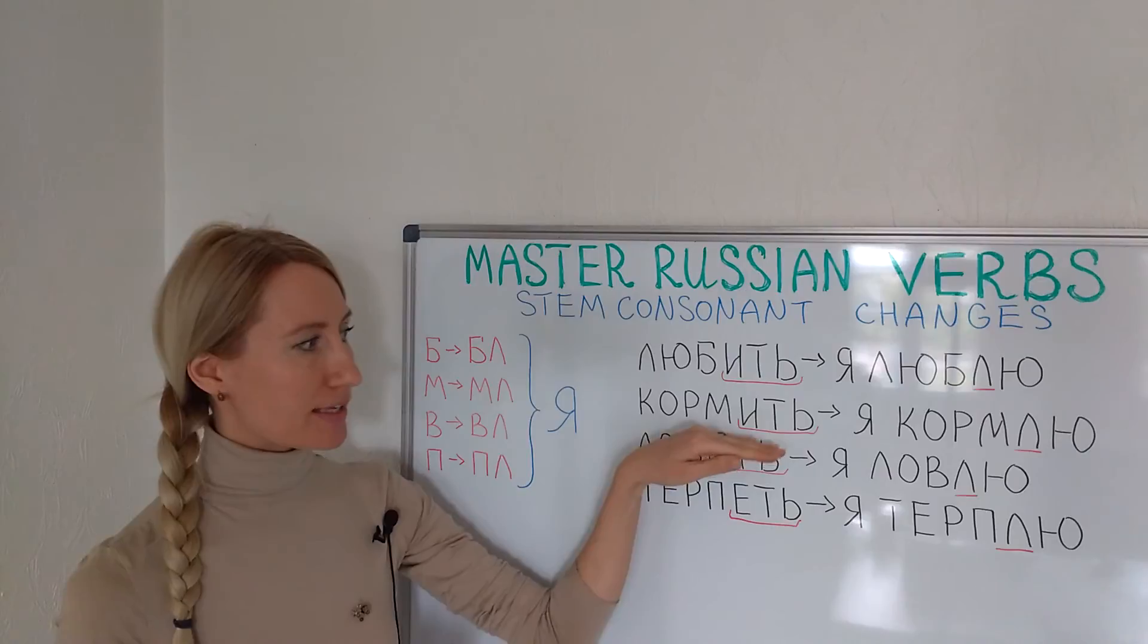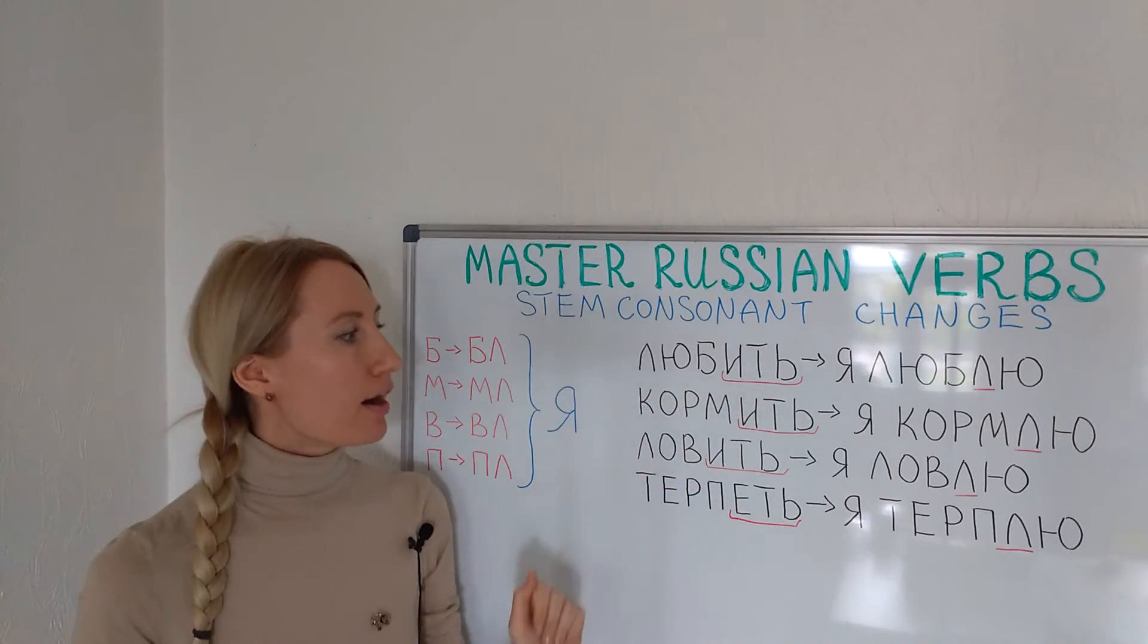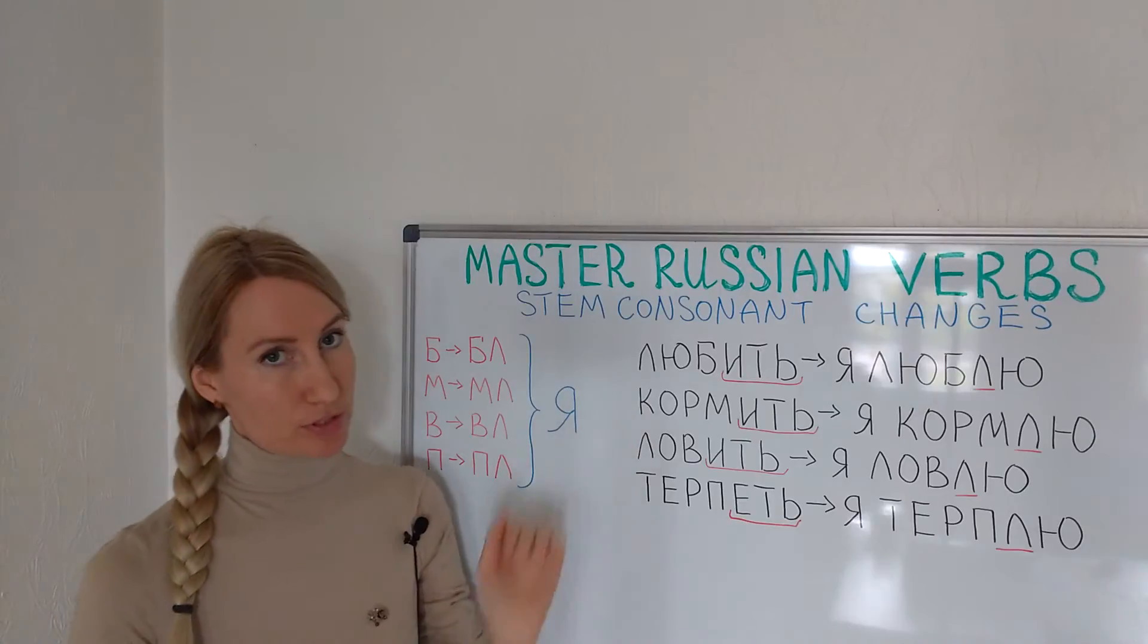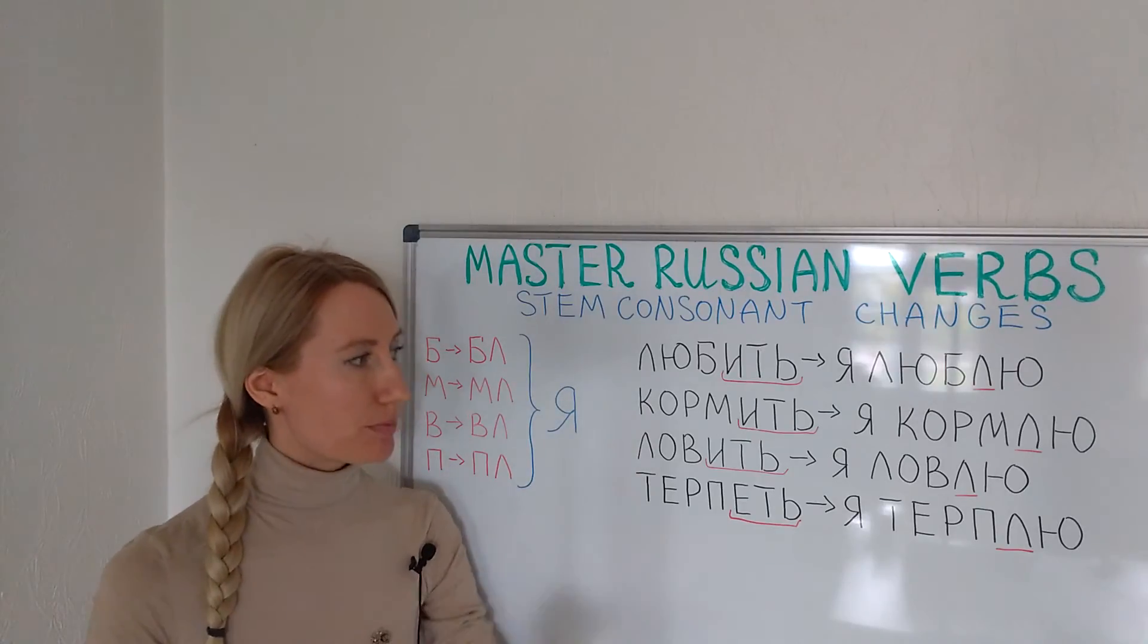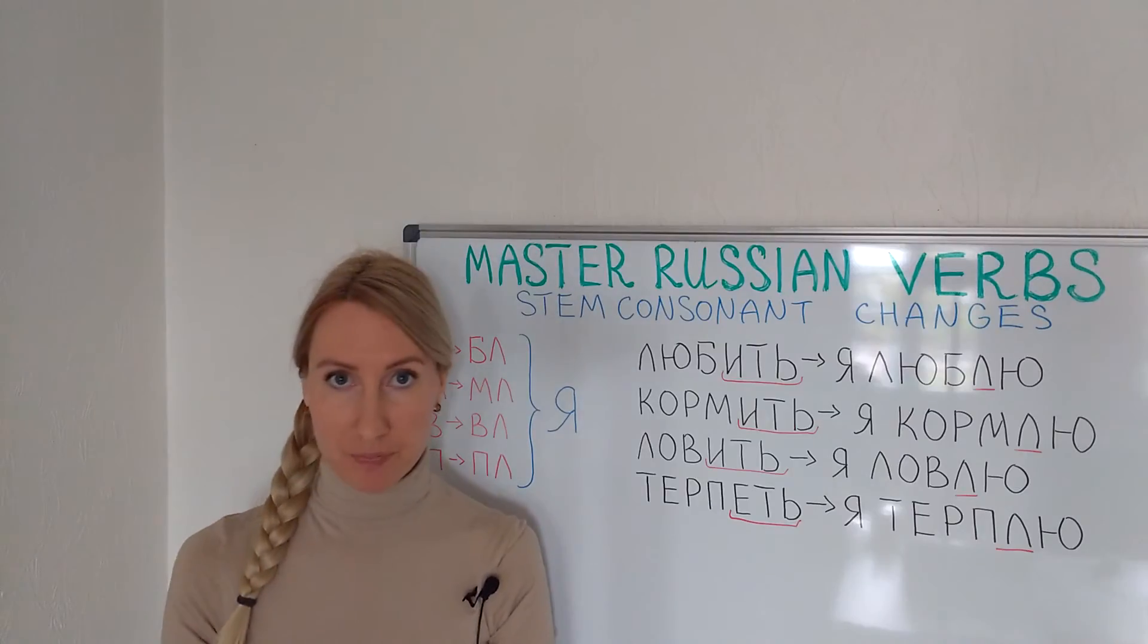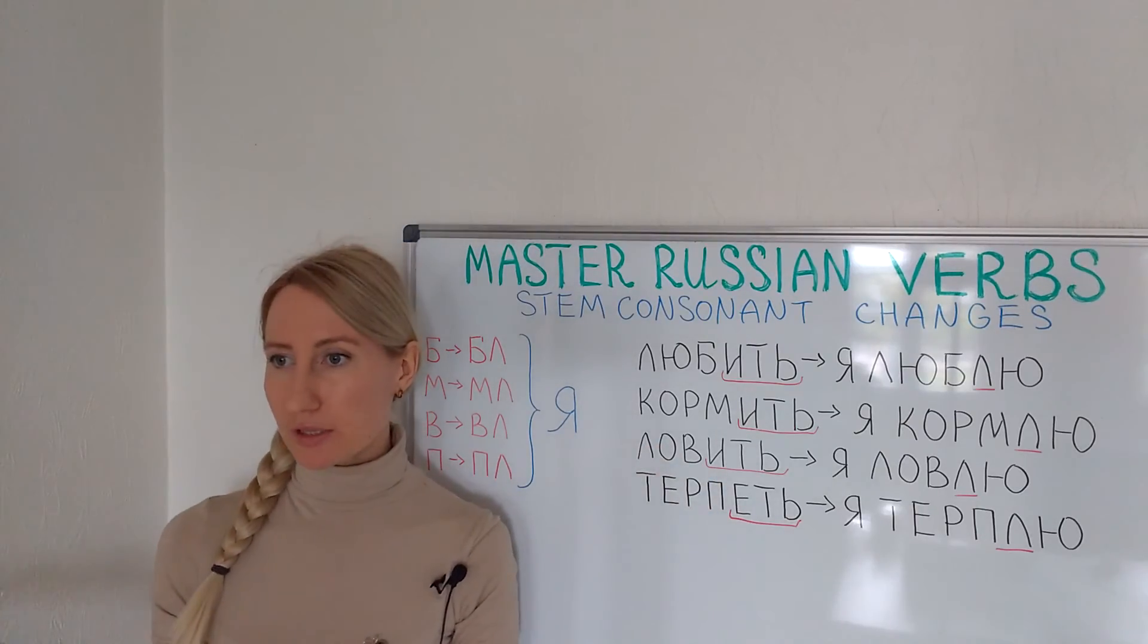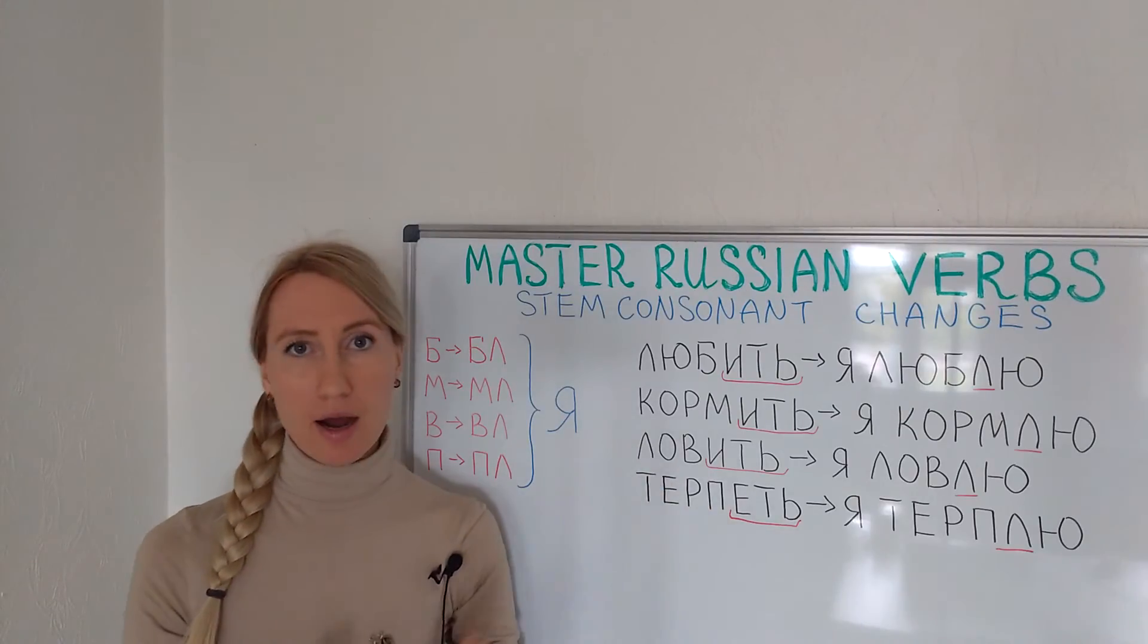As I said, almost all the verbs that end with -ить. Ловить is the third example, to catch. Я ловлю according to the transformation, but ты ловишь, он ловит, мы ловим, вы ловите, они ловят.